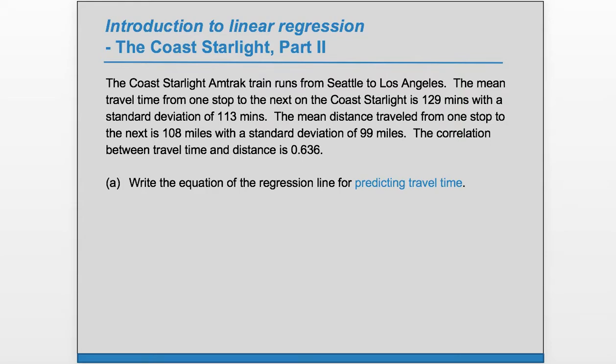So we can record the summary statistics. Travel time is y, and so here travel time has a mean of 129 and a standard deviation of 113. And then we record those values for x as well, and we record r.